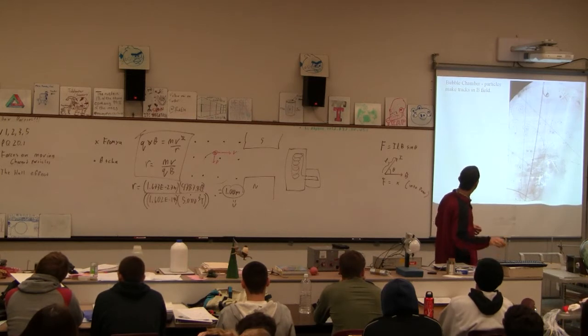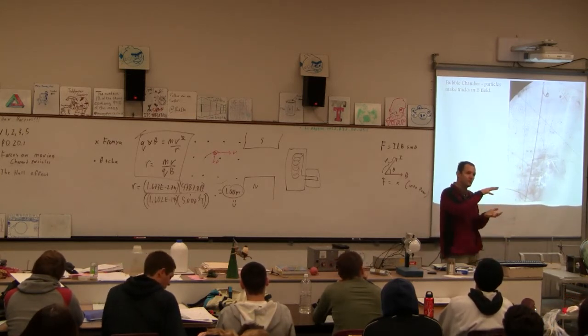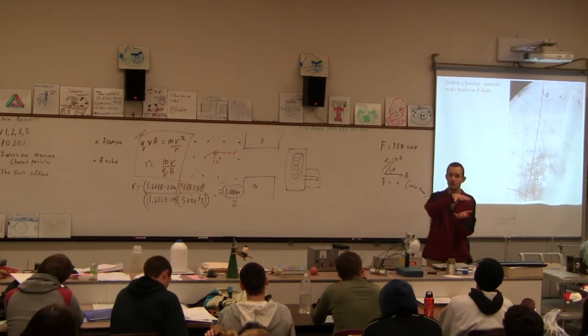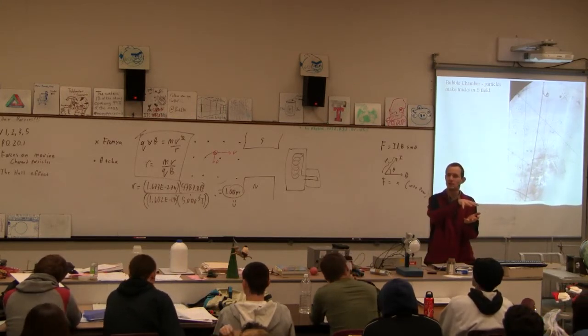Notice that these tracks are curving. They curve because you put bubble chambers in magnetic fields, and from the radius of curvature you can deduce things about the velocity and mass of the charged particles.